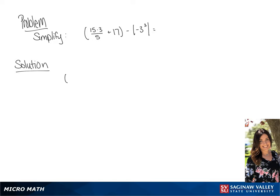We are going to use order of operations to simplify this problem. We are going to simplify what's in the parentheses, the exponent, and the absolute value brackets.